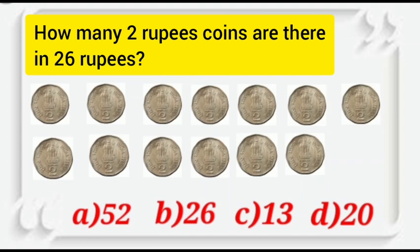Let's count the number of coins to make rupees 26 in total. Here we start counting the coins. The value of first coin is rupees 2. And when we keep on adding, we will find the total amount equal to rupees 26.